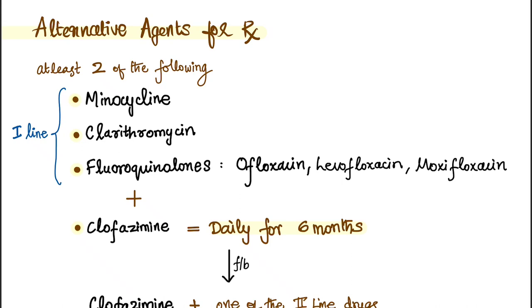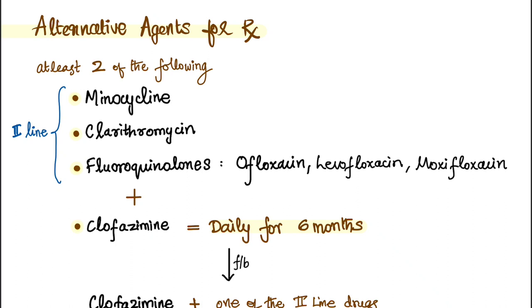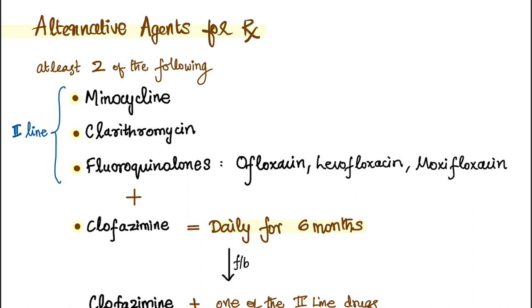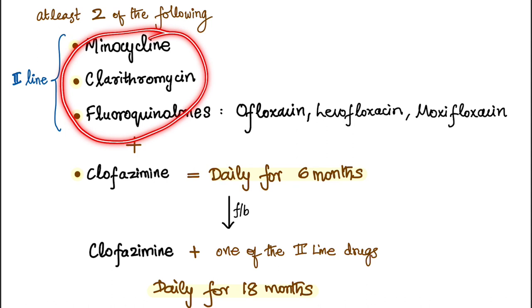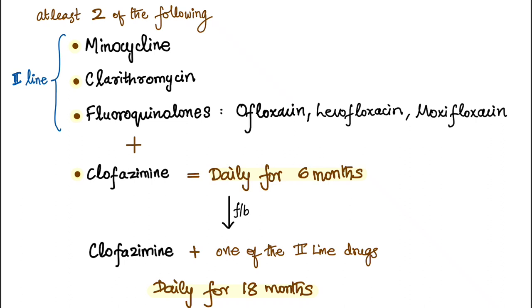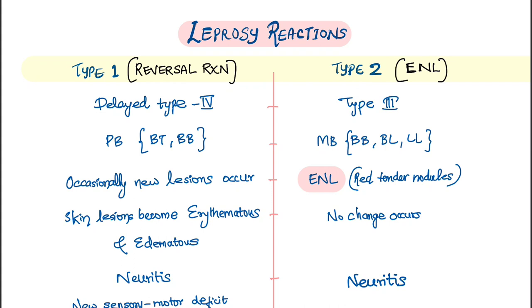If the patient has resistance to rifampicin, second-line drugs can be considered. These are minocycline, clarithromycin, and fluoroquinolones including ofloxacin, levofloxacin, and moxifloxacin. At least two of these second-line drugs with clofazimine are given daily for the first six months, followed by any one second-line drug with clofazimine daily for 18 months.